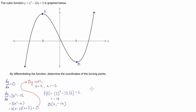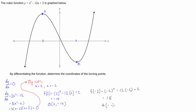Now for the other one, f of negative 2 is equal to negative 2 cubed minus 12 times negative 2 plus 2. So negative 2 cubed is negative 8, minus minus 24 is plus 24, which gives 16, plus 2 is 18. So our point A is going to be equal to (negative 2, 18).